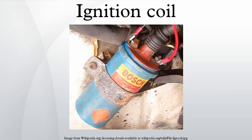Ignition systems are not required for diesel engines, which rely on compression to ignite the fuel-air mixture. Basic Principles: An ignition coil consists of a laminated iron core surrounded by two coils of copper wire. Unlike a power transformer, an ignition coil has an open magnetic circuit — the iron core does not form a closed loop around the windings. The energy stored in the magnetic field of the core is the energy that is transferred to the spark plug.